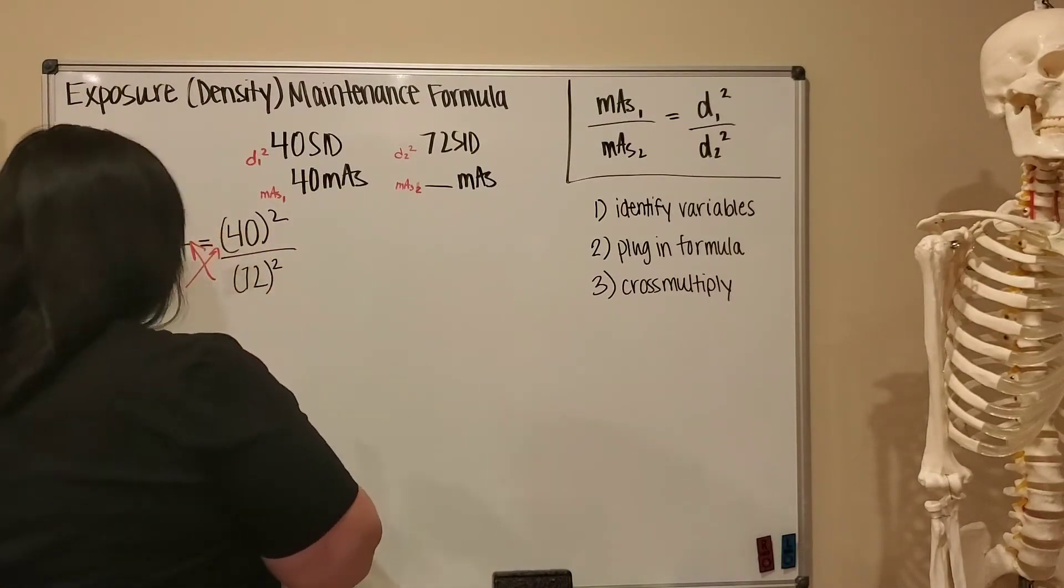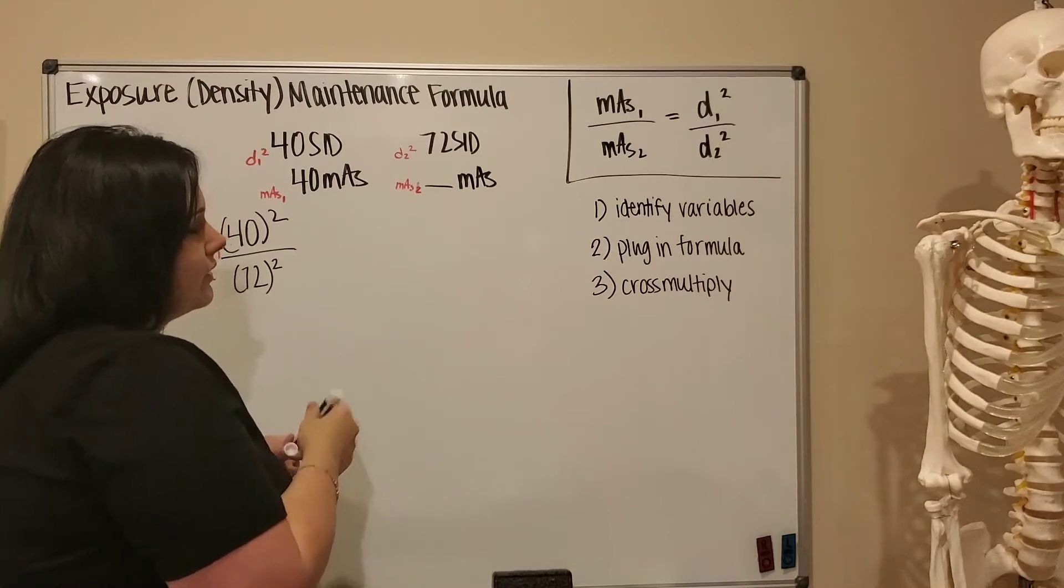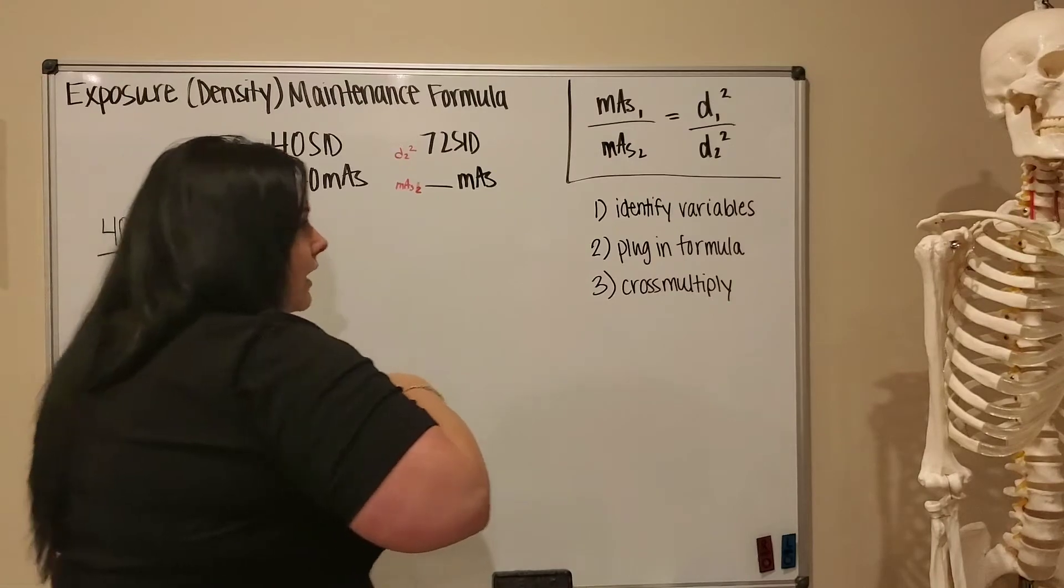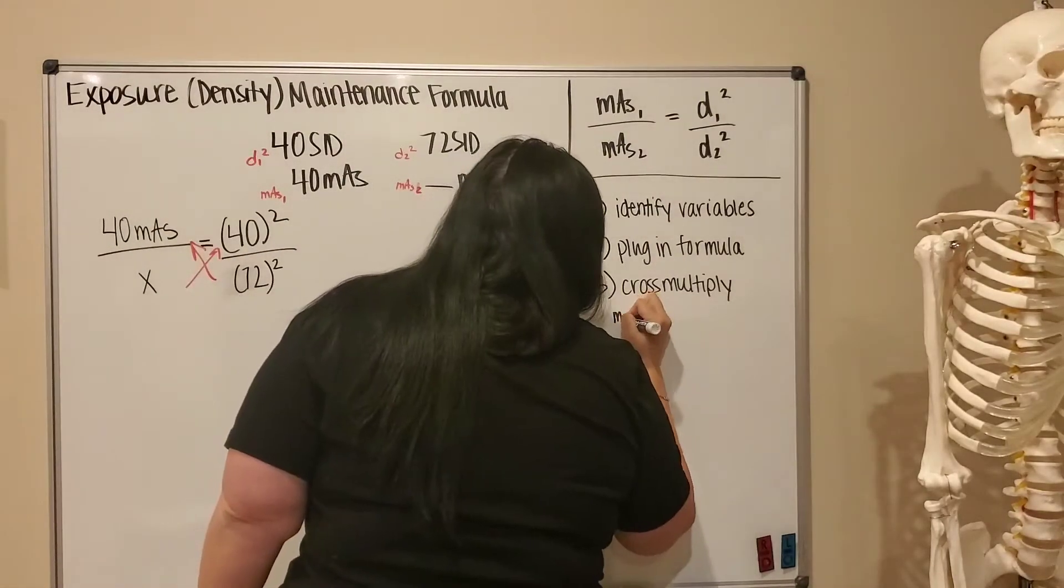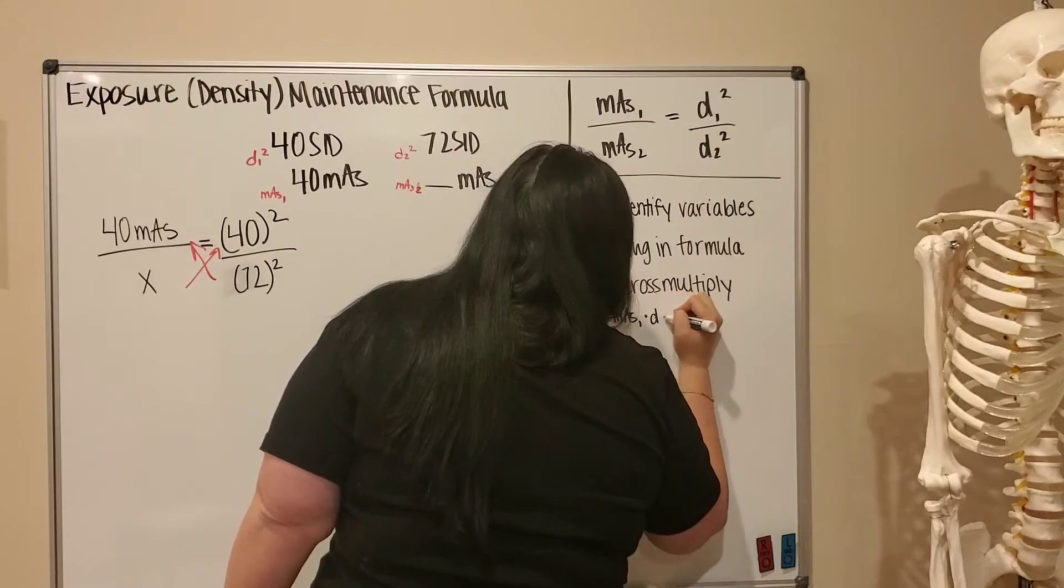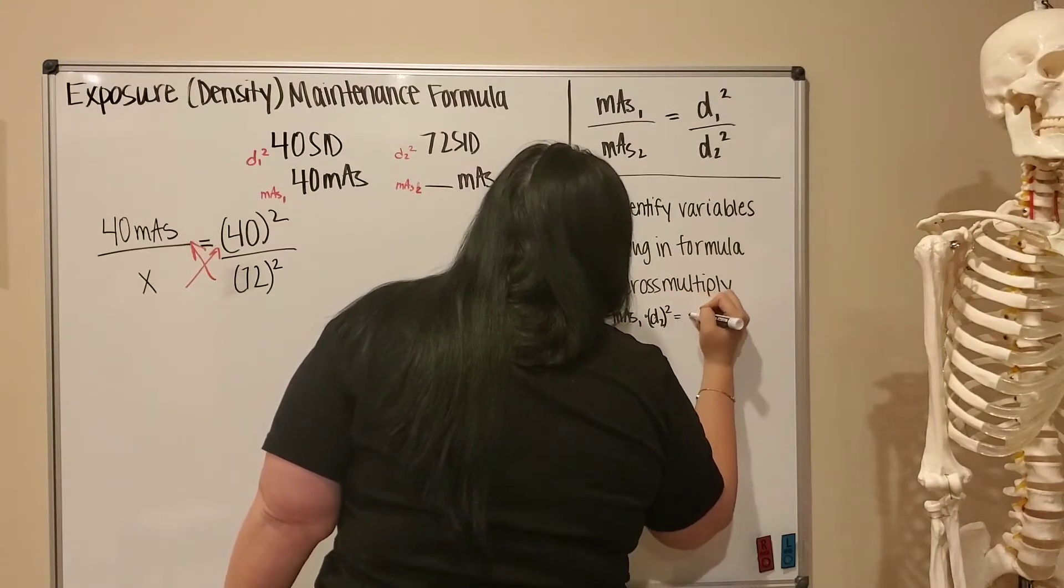But the other thing that I like to do is put this formula into my cross-multiplied style formula, in which case that would be mAs 1 times distance 2 squared is equal to mAs 2 times distance 1 squared.